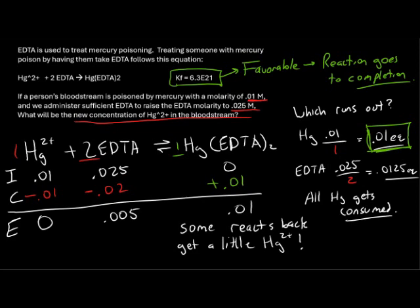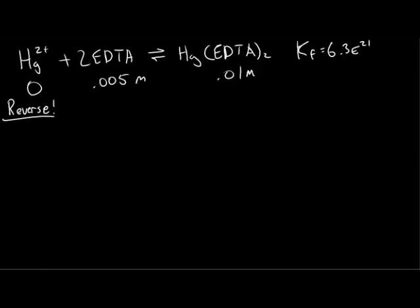In order to figure out how much mercury is going to get back-reacted, we're going to have to set up a reverse reaction table. From our previous step, we have these molarities for each of our reactants and products. We'll carry those forward when we write the reverse reaction.